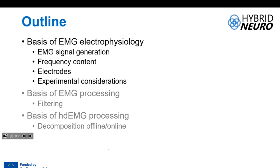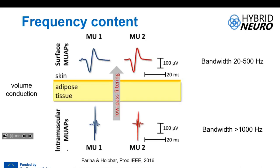About filtering: the bandwidth of surface and intramuscular signals is different, so it's always good to filter the signal in the bandwidth of interest. Below 20 Hz you usually have movement artifacts, and above 500 Hz you have high-frequency noise that doesn't belong to the signal, so you filter it out.